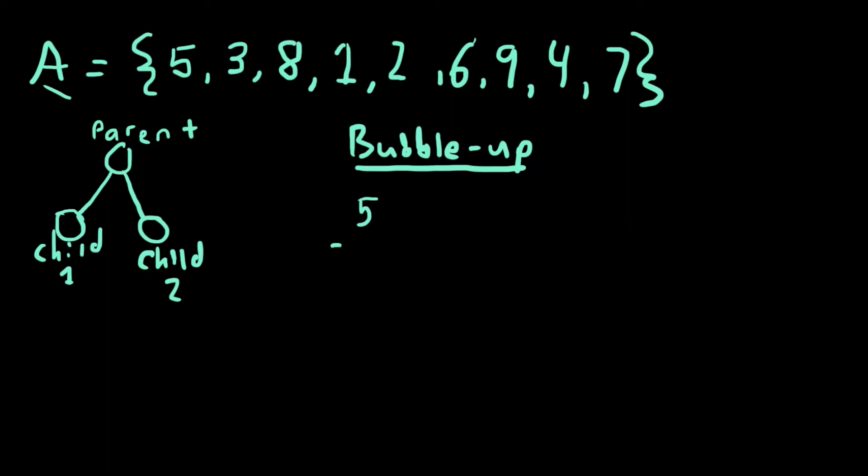The next node is 3 and inserted at position 1. Since it is not the root, the method compares the value of the current node with the parent node and performs a swap when the current node is less. In this case, 3 is less than 5, so the swap occurs and 3 now becomes the parent, and also the root, so it stops.